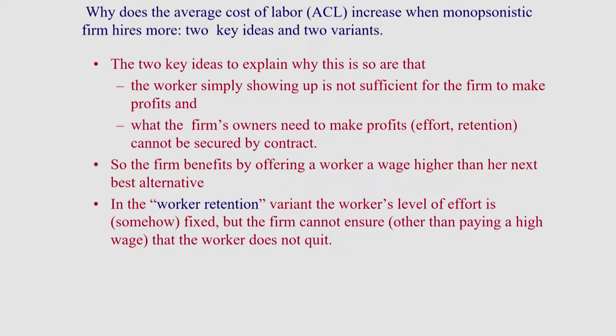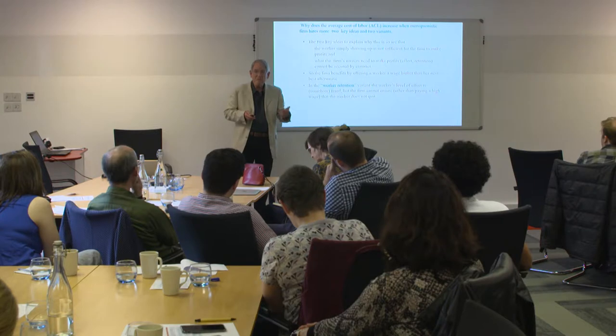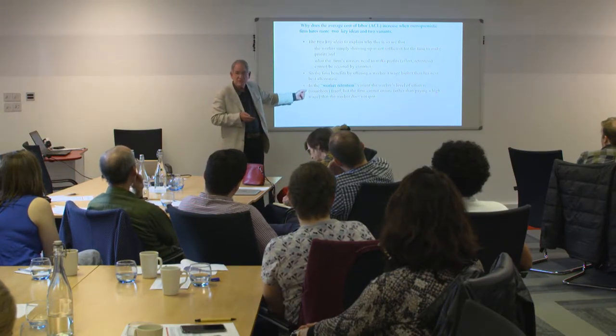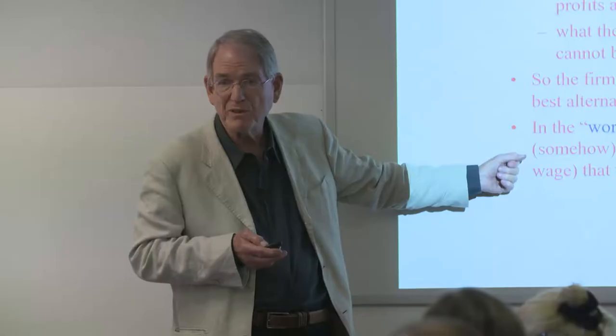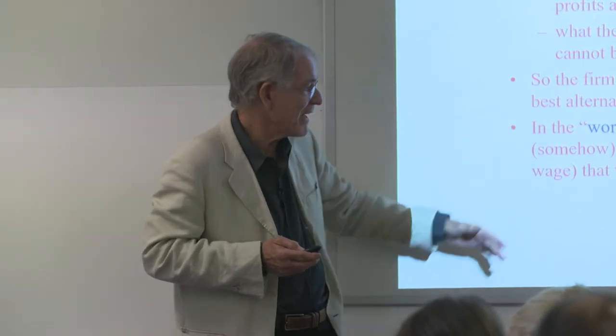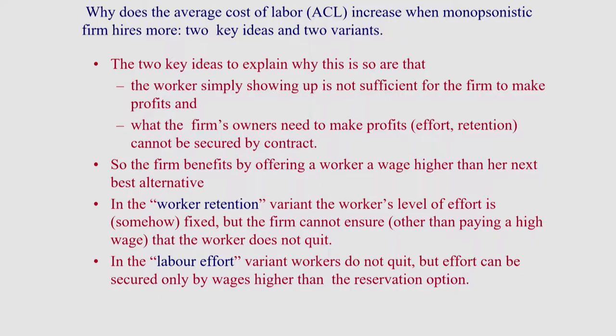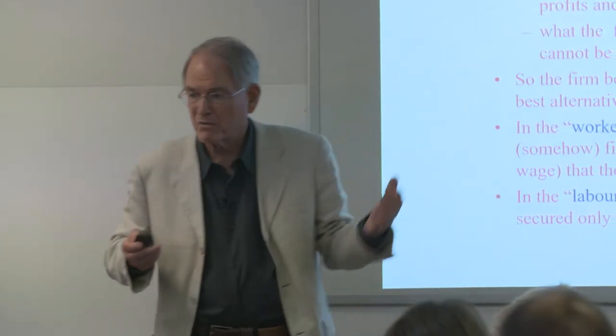There are two variants of this story. The first is the worker retention variant: what the worker may or may not provide, which cannot be secured by contract, is retention — staying with the firm. This view says: suppose the worker's effort level is fixed. The employer still has the problem that the individual may leave, imposing costs on the firm. So the firm has to pay a wage higher than her next best alternative so that she won't leave. The labor effort variant is that workers need not work unless induced to do so by a wage higher than the reservation option.